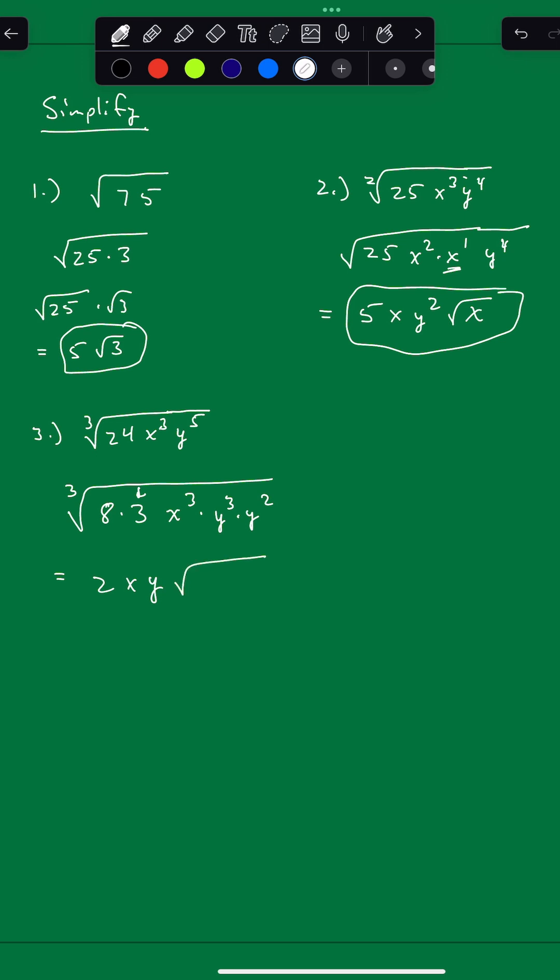And then 3 does not go into 2 evenly, so we are going to leave that y squared underneath. And so that's going to leave us the cube root of 3y squared. And so there's our answer. Hope this helped. Later.